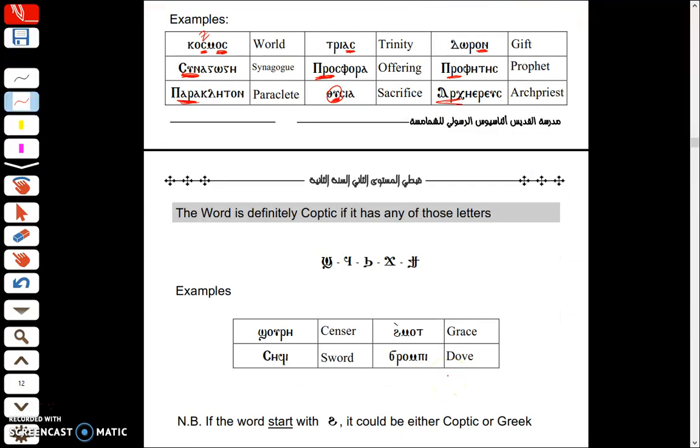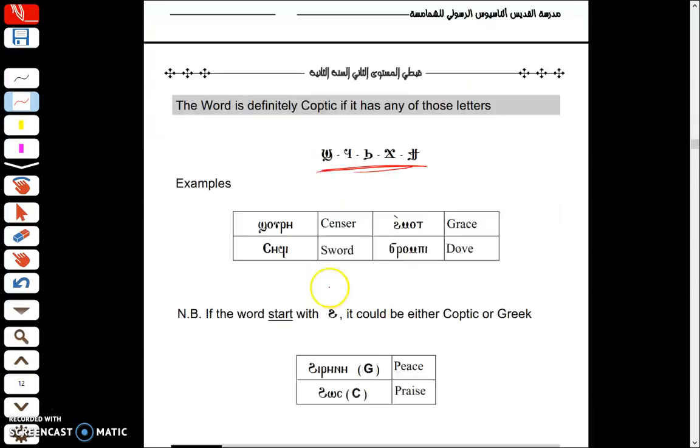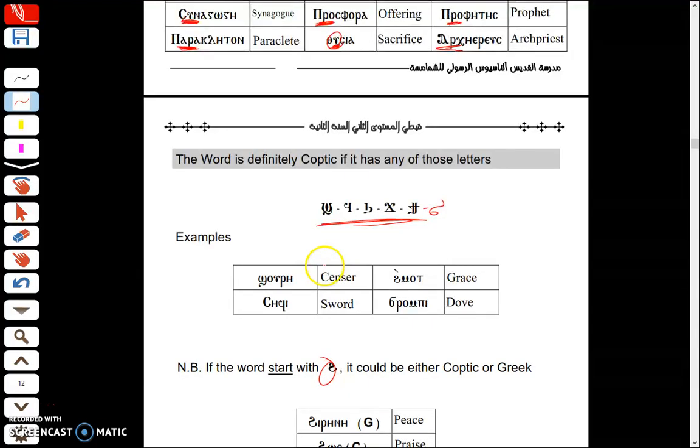Some of the stuff that would surely be Coptic: if you remember the letters, you know that the last seven letters are not in the Greek language but they are coming from the Demotic Greek writing which is the previous development of the Egyptian writing which eventually became Coptic. Shai, Fai, Khai, Hori, Jenjima, Ti. Those are the letters at the end. If it's one of the seven except the Hori which we're gonna explain why, if it's one of the six letters that come at the end you know for sure it's not Greek, it's definitely Coptic.